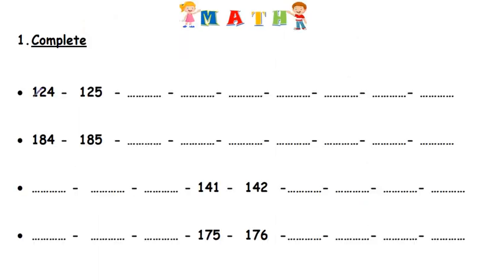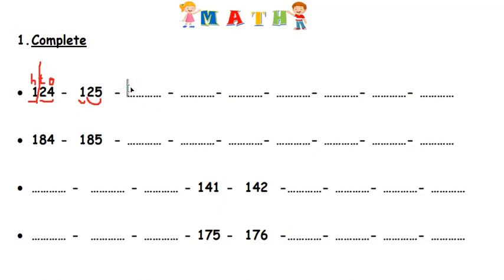So in here I have one hundred twenty-four. Remember, we read the hundred alone and the tens and ones together. After one hundred twenty-four I have one hundred twenty-five. And then after one hundred twenty-five, after twenty-five it's twenty-six, so I write one hundred twenty-six.